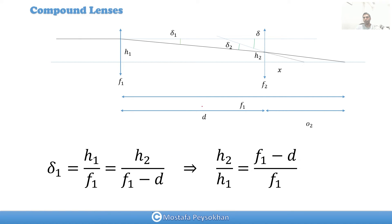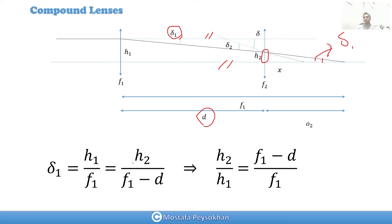To find h2 over h1, we note that this angle is delta one, and because these two lines are parallel, this angle is also delta one. We can see that h1 over f1 equals h2 over (f1 minus d), because the unknown distance is f1 minus d — that's the total length minus d, the distance between the two lenses. So h2 over h1 equals (f1 minus d) over f1.